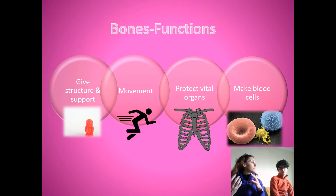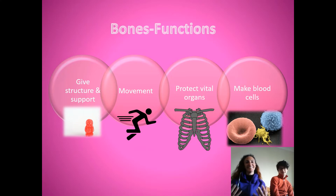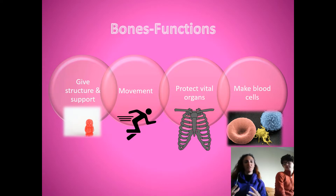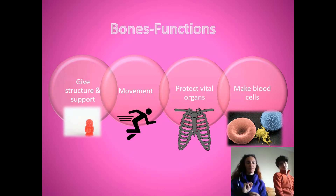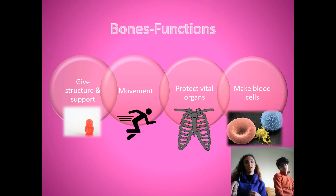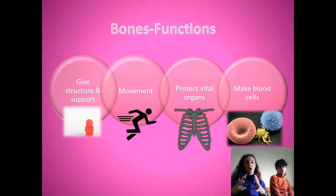And Graham, can you think of any other bones that might protect another organ in your body? Your skull. Yes, exactly — your skull protects your brain. And did you know your brain is really, really soft? If you were to put your finger on a brain, it would actually feel like toothpaste — it's that soft. So you need the skull to protect that soft brain.